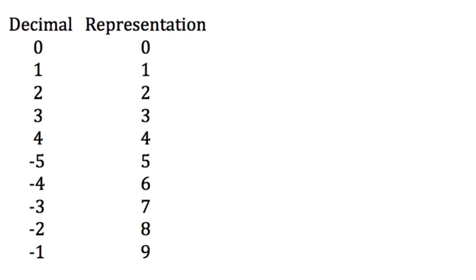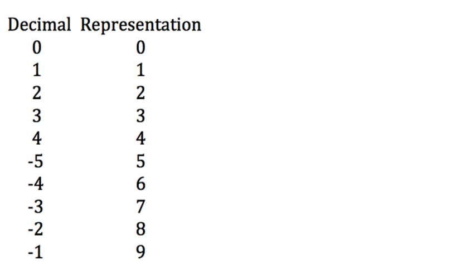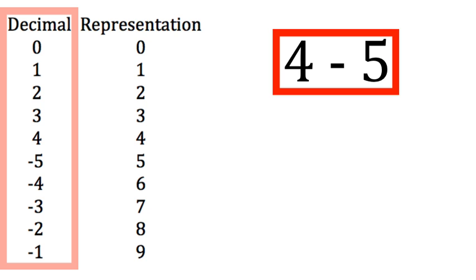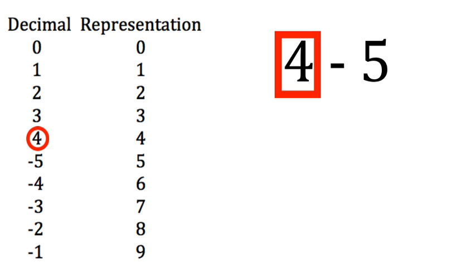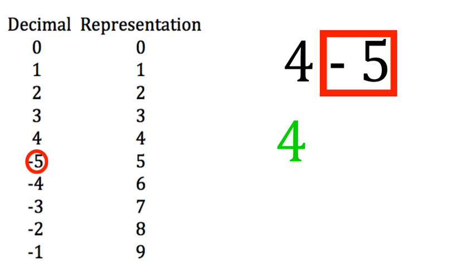So let's start with a little example. What is 4 minus 5? Well, firstly, we need to convert the decimal numbers into the representation numbers. So we look in the table, we look up 4 in the decimal, and the representation of that is 4. Then we look again in the decimal and see that the representation of minus 5 is plus 5.